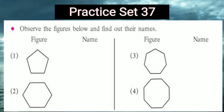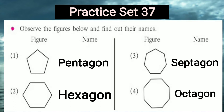So the names of these figures are: the first is a pentagon, the second is a hexagon, the third is a septagon or heptagon, and the fourth is an octagon.